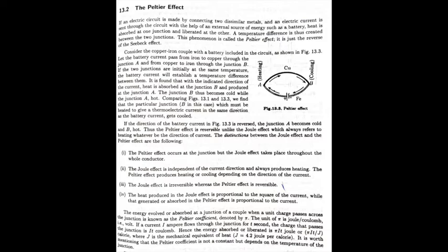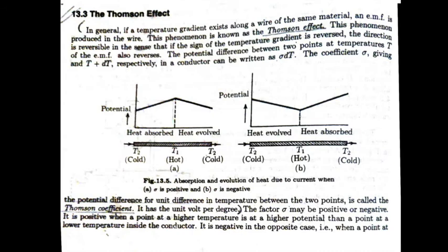I have completed Seebeck Effect and Peltier Effect. Today, I will discuss about the last effect which is called Thomson Effect. Here, if we take a material wire and create a temperature gradient along the wire, then EMF is produced in the wire. This phenomenon is called Thomson Effect.